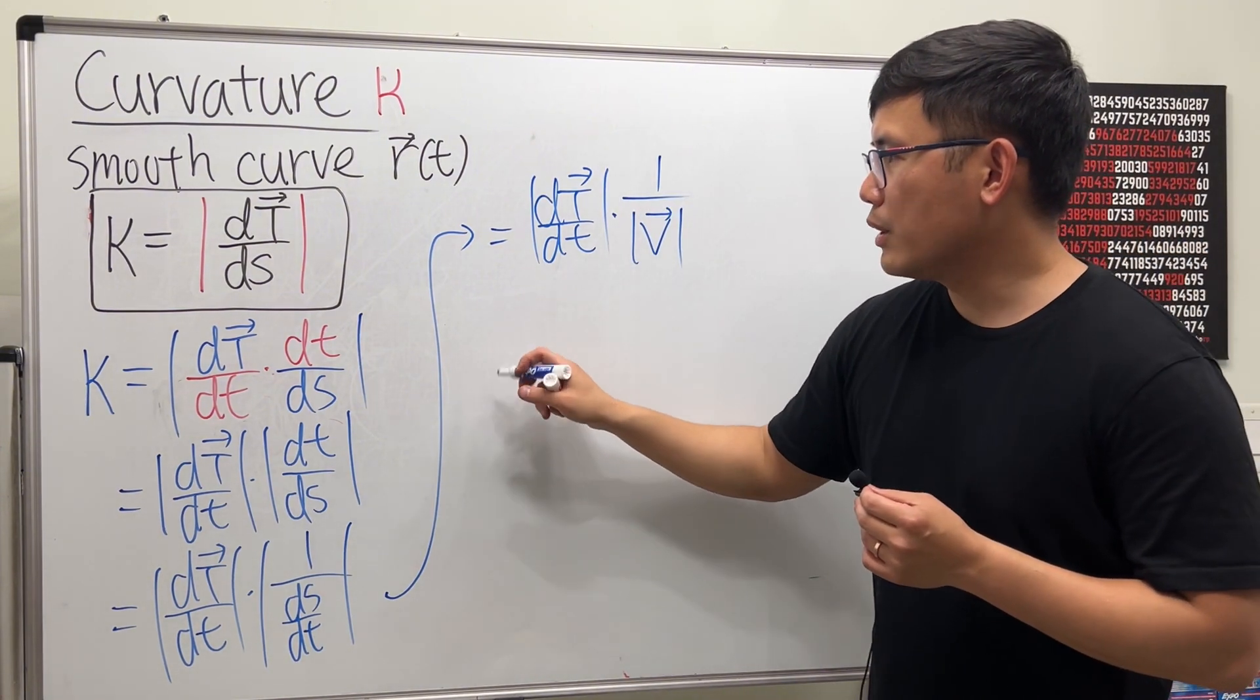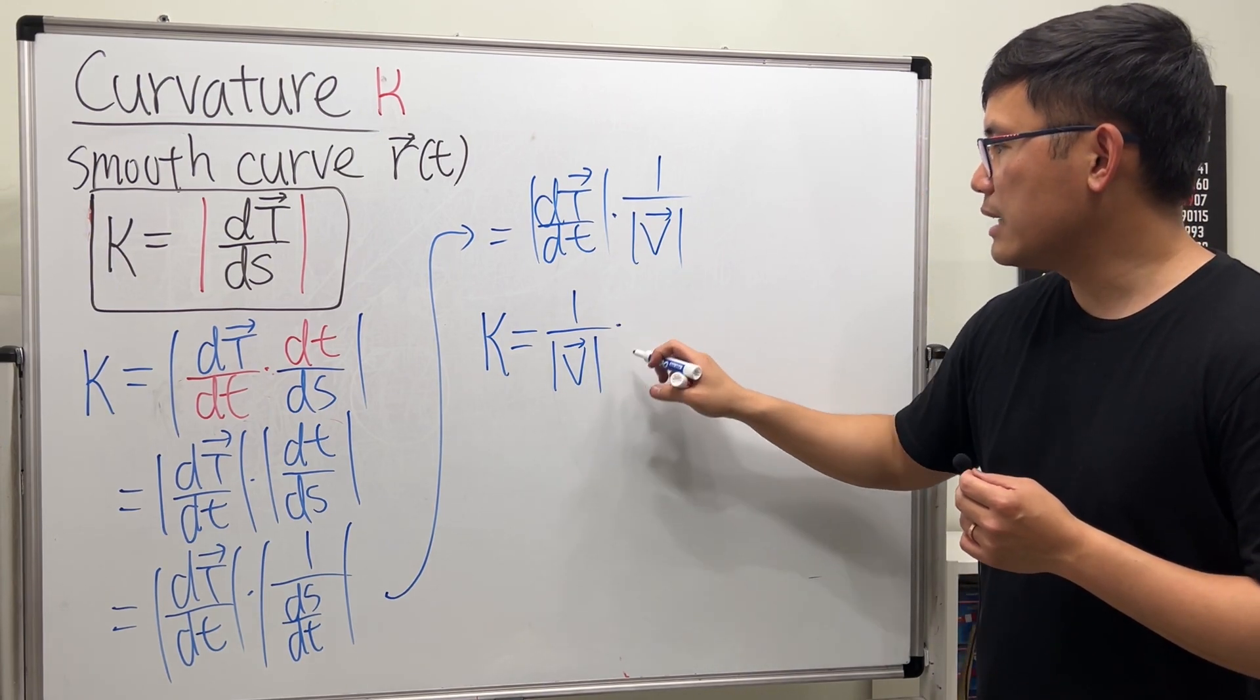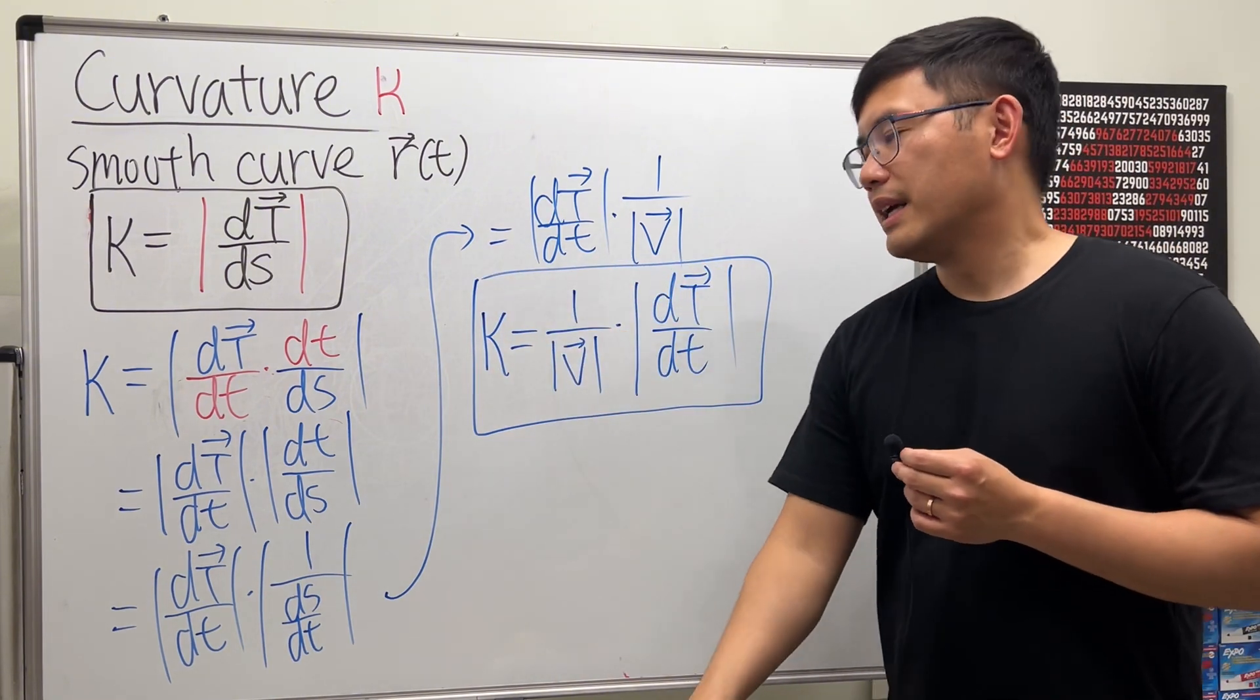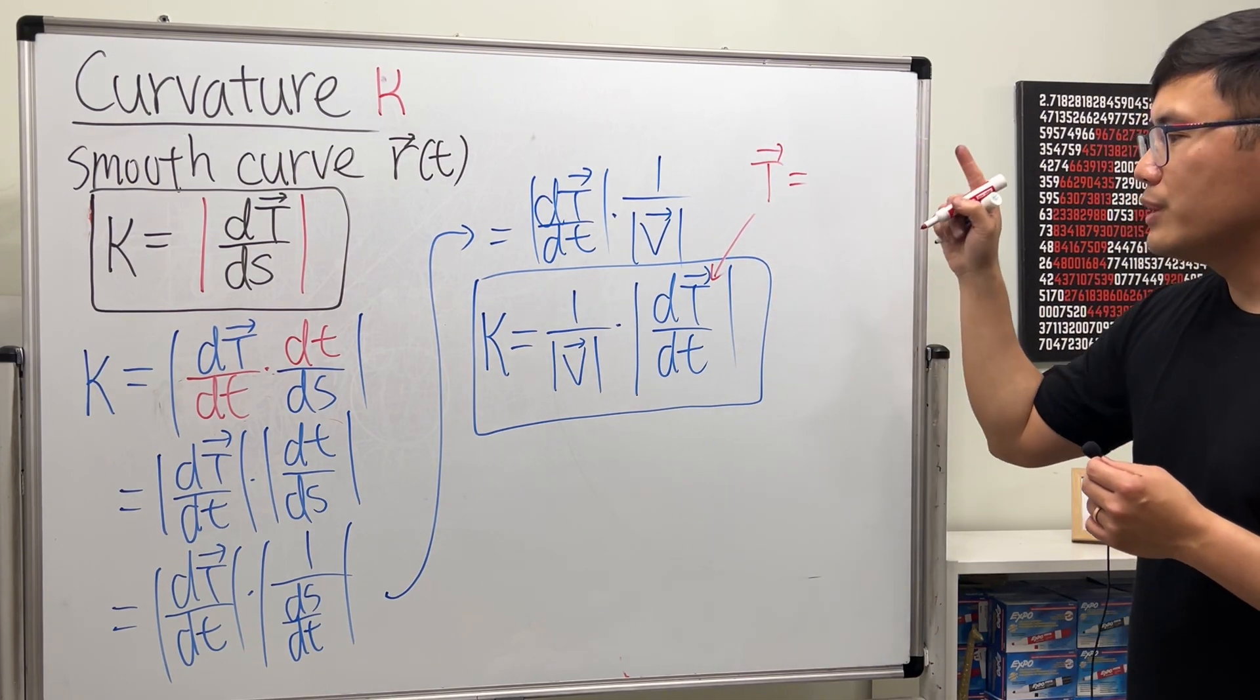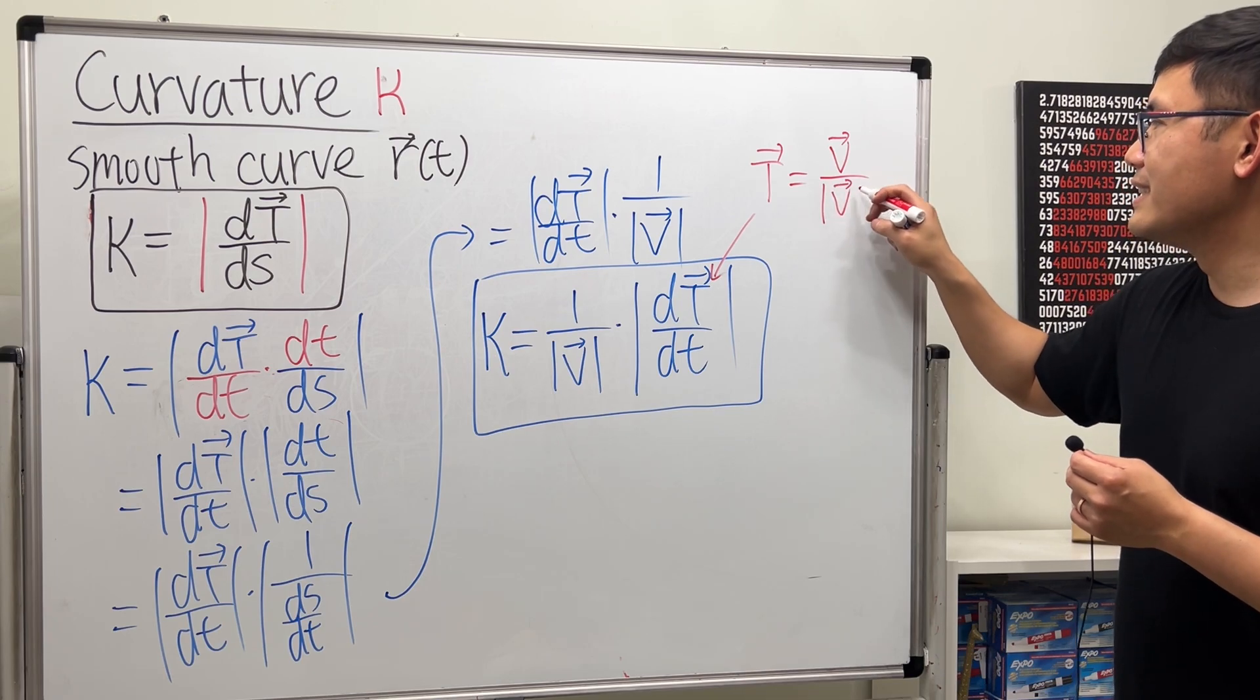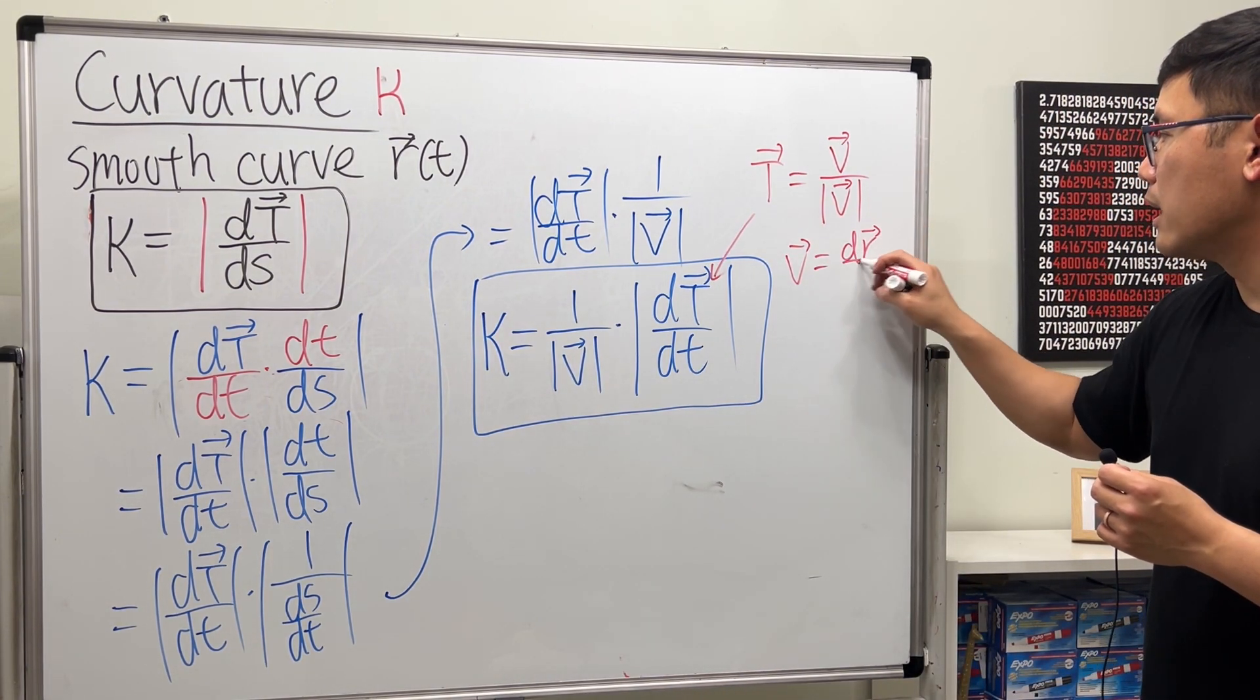The absolute value on the outside doesn't really matter anymore because we have that right here already. At the end, I will just tell you guys kappa is equal to: one over the magnitude of the velocity vector times the magnitude of the derivative of the unit tangent vector with respect to time. Let me just remind you guys—the unit tangent vector, to compute that, we look at the derivative of r, which is just the velocity vector, and then we divide it by the magnitude of it. The vector v is just the velocity of the position, so all you have to do is take the derivative of r with respect to t.